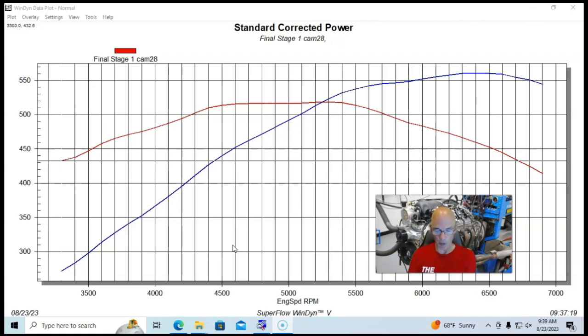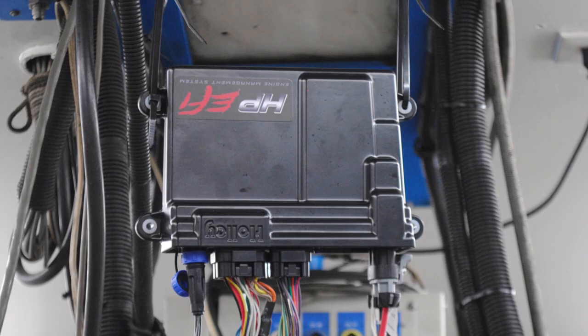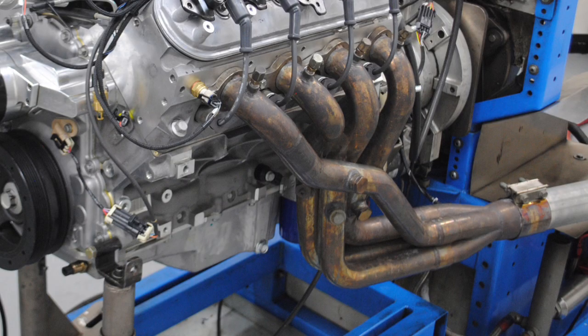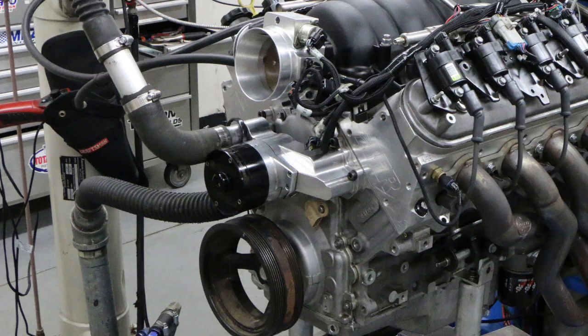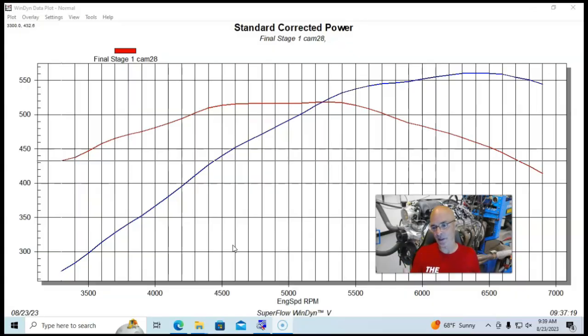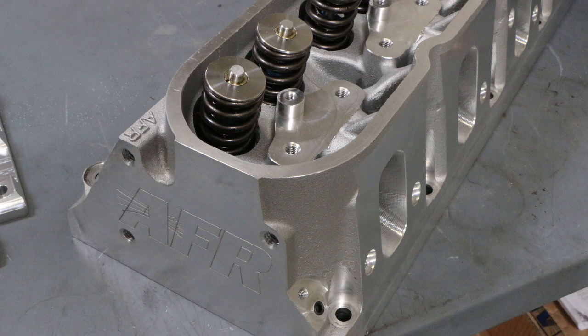In this particular instance, we ran the LS3 the way that we normally do with a Holley HP management system. This one had inch and seven-eighths headers. We had the factory LS3 intake manifold and a 90 to 92 millimeter throttle body. We run with no accessories the way that we normally do. But what makes this different on the Airflow Research cam test is that this one was also equipped with Airflow Research heads.